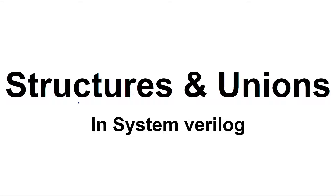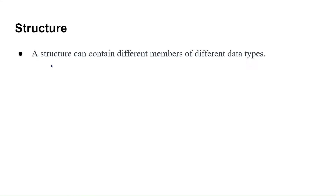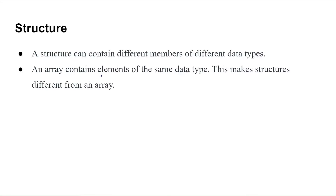In this session, I'm going to discuss structures and unions in SystemVerilog. We'll first look at arrays because arrays and structures are similar function-wise. The difference is how they store elements. In arrays, you can only store the same data type elements — if you're using bit type, you can store only bit type. A structure helps you store different members of different data types, which makes structures different from arrays.